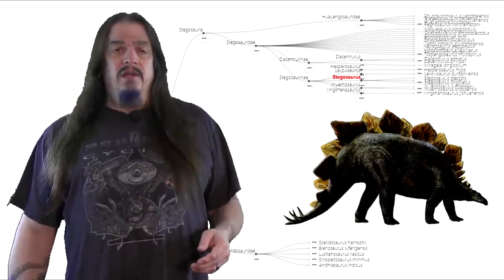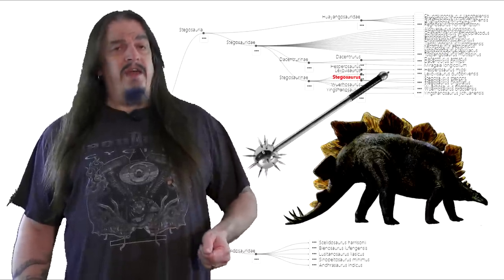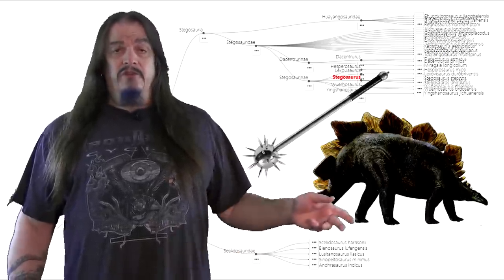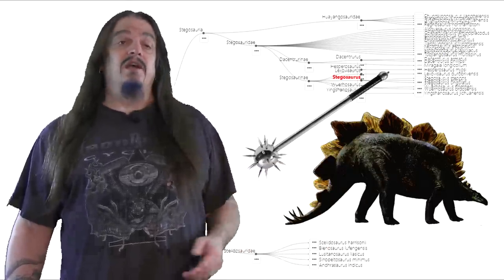This weaponized tip of the tail, like a medieval mace, is called a thagomizer. And this tradition was retained, or rather adopted, on the other side of the family tree as well.